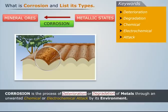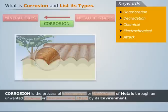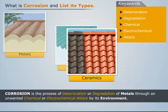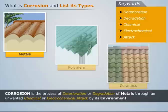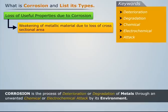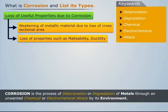Thus, corrosion is the process of deterioration or degradation of metals through an unwanted chemical or electrochemical attack by its environment. Materials like metals, polymers, ceramics, etc. are usually affected by corrosion. Out of these, metals undergo corrosion most frequently, and hence our discussion is mainly about corrosion in metals. Corrosion results in loss of some useful properties of metals, such as weakening of metallic material due to loss of cross-sectional area, and loss of properties such as malleability and ductility.